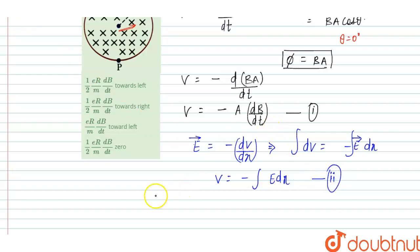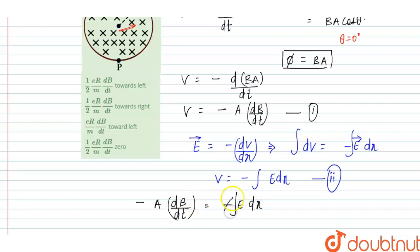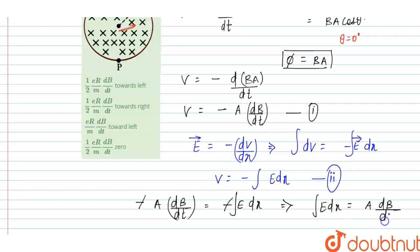From equations 1 and 2, we can write: minus A·dB/dt equals minus of the integration of E·dx. The minus signs cancel, so the integration of E·dx equals A·dB/dt.